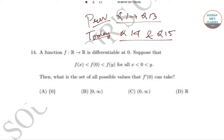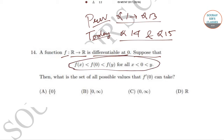In question number 14, it has been given that there is a function f which goes from R to R and is differentiable at 0. The condition is that f(x) < f(0) < f(y) for all x less than 0 and 0 less than y. We have to find the set of all possible values that f'(0) can take — whether it is the singleton set {0}, the interval [0, ∞), the open interval (0, ∞), or the real number set R.